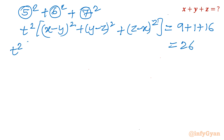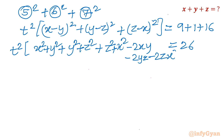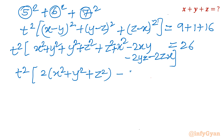Now I will expand using a minus b whole squared. From the three squares I get: x² plus y² (from first), y² plus z² (from second), and z² plus x² (from last), giving 2(x² plus y² plus z²). Then the cross terms: minus 2xy, minus 2yz, minus 2zx. So inside the bracket I have 2(x² plus y² plus z²) minus 2(xy plus yz plus zx), and the right-hand side is 26.